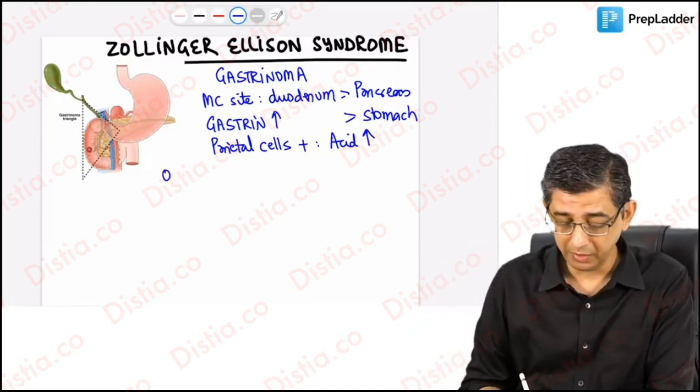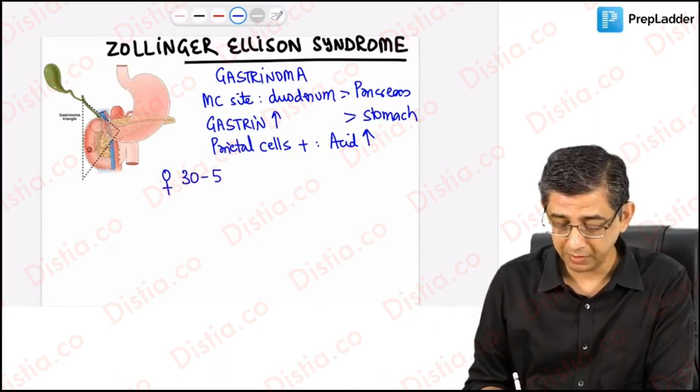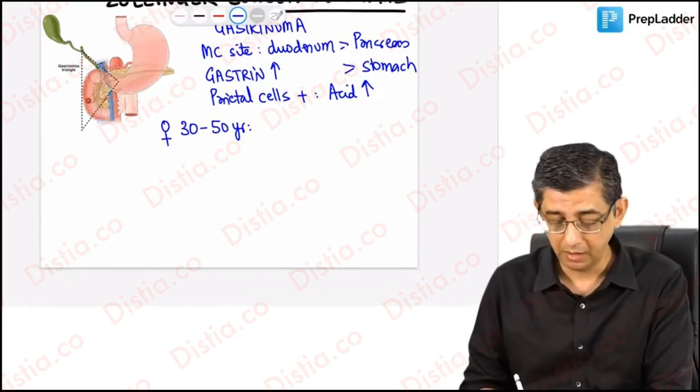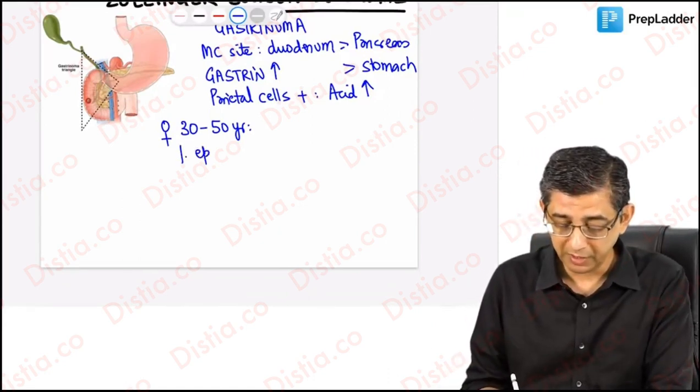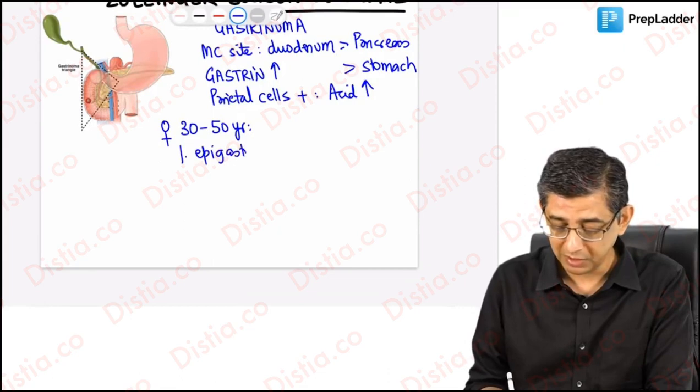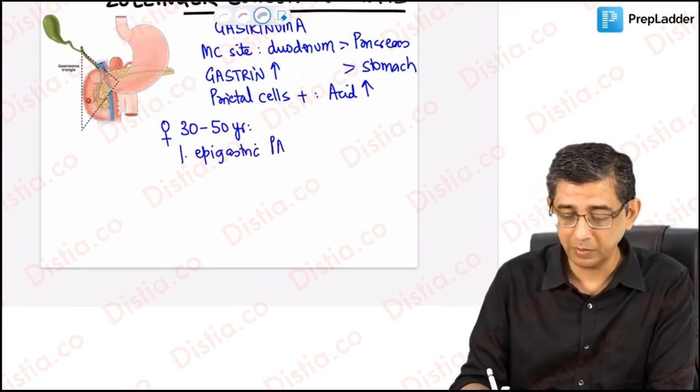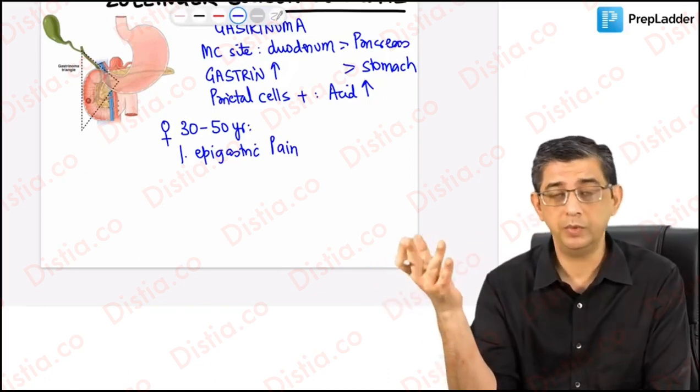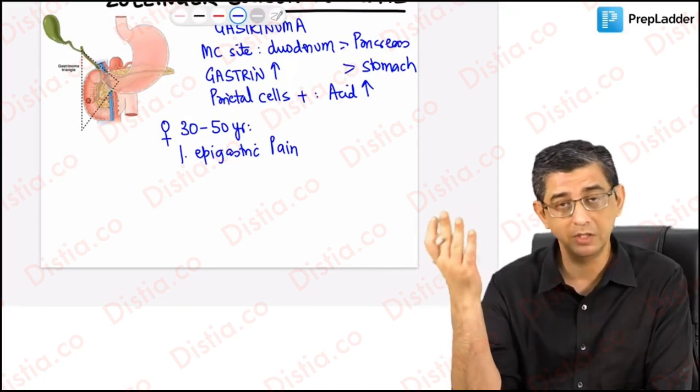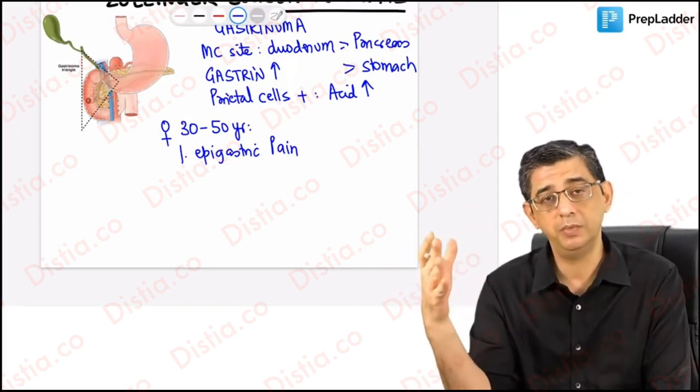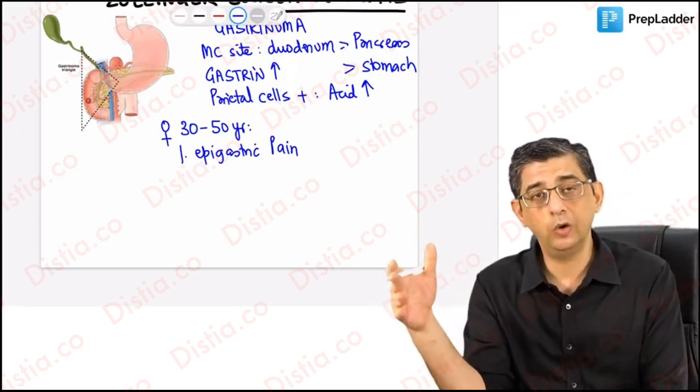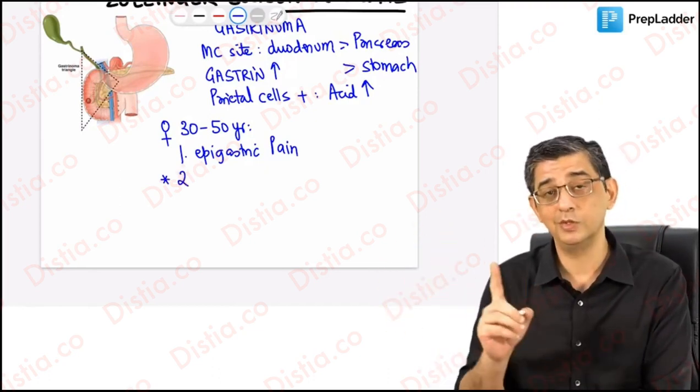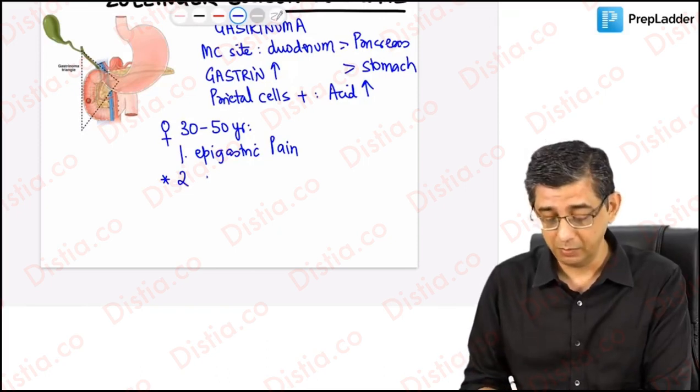The question can begin by describing a young female 30 to 50 years of age, which is also the age at which PUD can present. The opening line will always describe epigastric pain and usage of PPIs by these patients. This person has been using PPIs for an indiscriminately long period of time, and the keyword that will tell you this is not H. pylori-based will be presence of diarrhea.